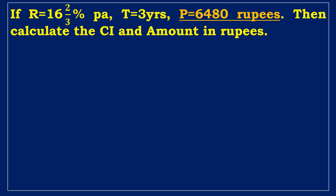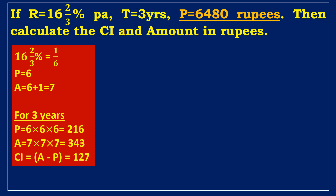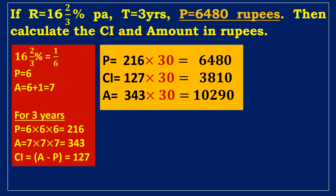Next example: Rate = 16⅔% per annum, time = three years, principal = 6480 rupees. Calculate the compound interest and amount. Given: 16⅔% = 1/6, so the principal is 6 and amount is 7. For three years, principal = 6³ = 216 and amount = 7³ = 343. CI = 343 − 216 = 127. Since 216 × 30 = 6480, the multiplier is 30. Required CI = 30 × 127 = 3810 rupees, and required amount = 30 × 343 = 10,290 rupees.